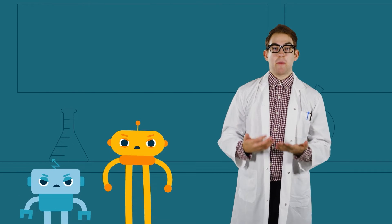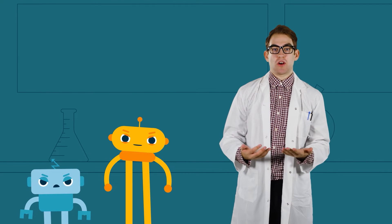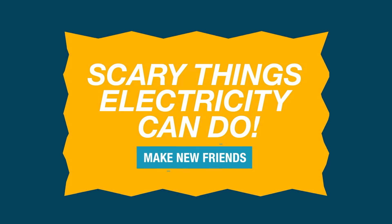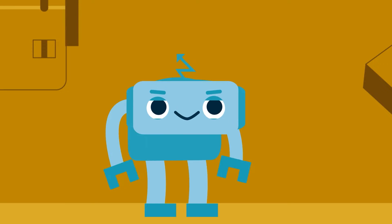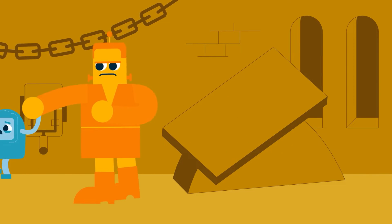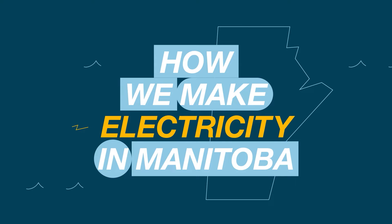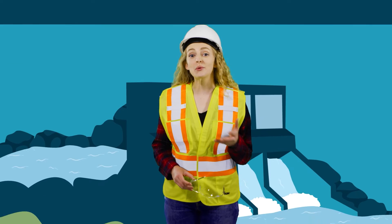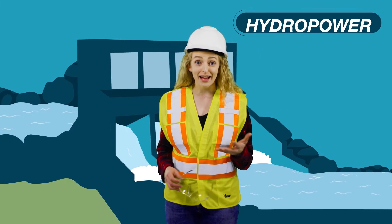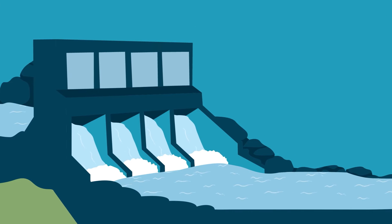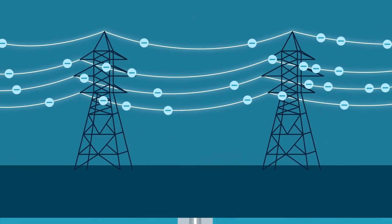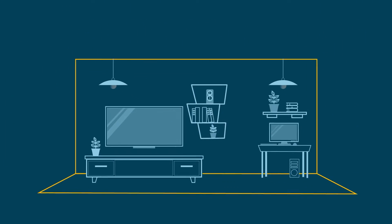The electricity in our flashlight example was created using a battery. In Manitoba, most of our electricity comes from hydroelectric generating stations built on rivers — they use the force of falling water to run a generator, called hydropower. Hydro dams store up water; the force of falling water turns the blades of a turbine. The spinning moves the electrons from atom to atom, and this stream of electrons flows through power lines all across the province.